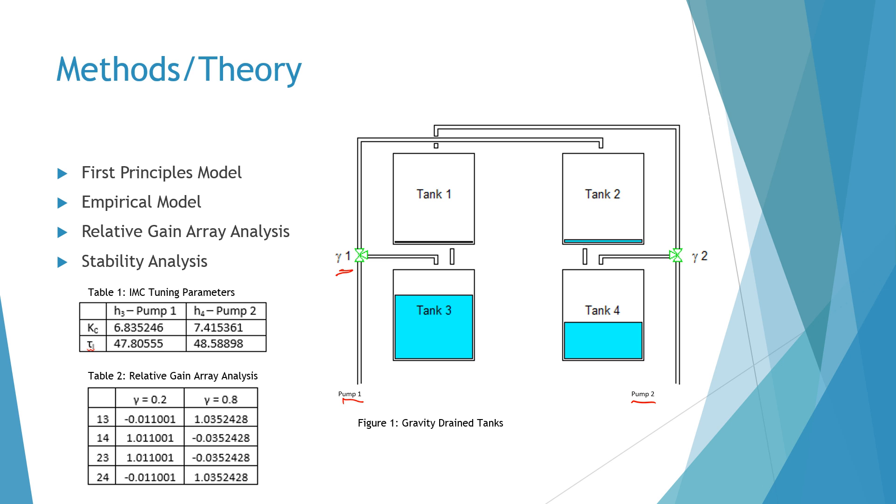We ran a material balance on each tank to see how the system responds and found that when water is flowing through another tank it gives a second order response. We kept this in mind while coming up with our empirical model, but we used a first order model when running our doublet test. From our doublet test we found the transfer function values and used IMC tuning parameters to get our controller values shown in table one.